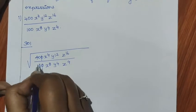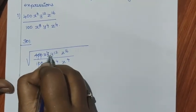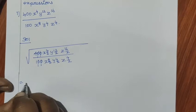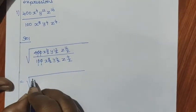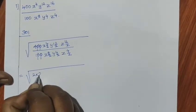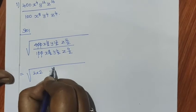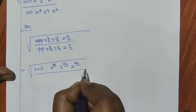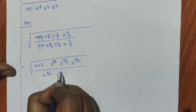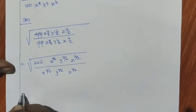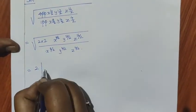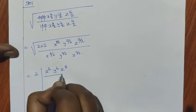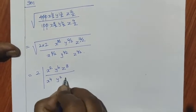Cancel the zeros: 400 divided by 100, cancel zeros, gives 4. Now divide each power by 2. So we get square root of 4 x power 4 y power 12 z power 16 divided by x power 8 y power 4 z power 4. Taking the square root: 4 is 2 into 2, so x power 4 by 2, y power 12 by 2, z power 16 by 2, divided by x power 8 by 2, y power 4 by 2, z power 4 by 2.